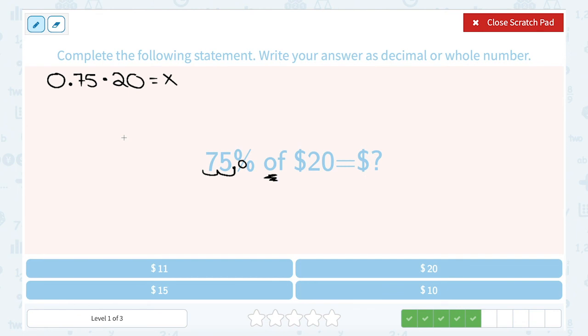Okay, well, 0.75 times 20 gives me 15. So 75% of $20 is $15. Now, again, use your logic here. 75% is 3 quarters, right? What's a quarter of $20? Well, 20 divided by 4 is $5. So 3 of that, 5, 10, 15. So it makes sense.